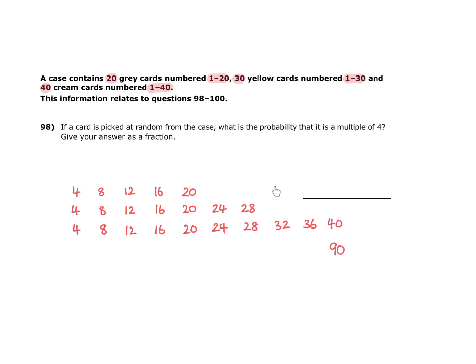So, how many of those cards do we have which show multiples of 4? Well, the grey cards have 5 numbers which are multiples of 4. The yellow cards have 7 numbers which are a multiple of 4, and the cream cards have 10 numbers which are a multiple of 4.